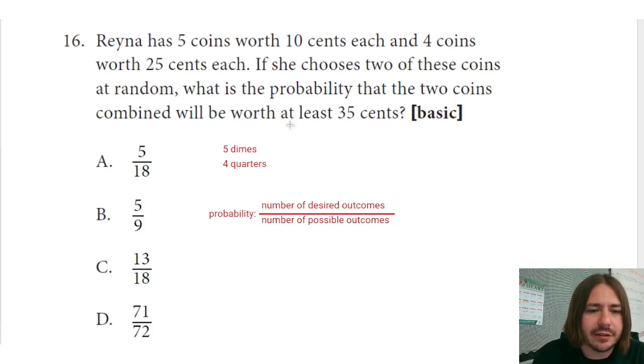If we want to find the probability of picking two dimes in a row, which is the only case in which you wouldn't get at least 35 cents, we will say okay, well the probability of getting the first coin to be a dime, since there are five dimes in this pile and a total of nine coins, the probability here is going to be five over nine. Now that's just the probability of picking a dime first.